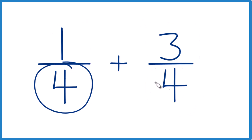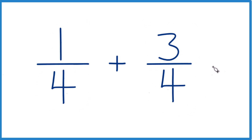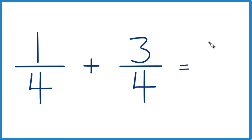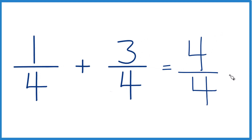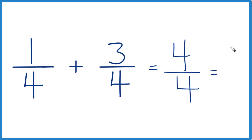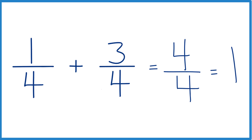So we'll just take 1 plus 3, that equals 4, and then we have 4 as our denominator — just bring that 4 across. 4 fourths: divide 4 by 4, you get 1. So in answer to our question, 1 fourth plus 3 fourths equals 4 fourths, or 1. And you can think about it like this.